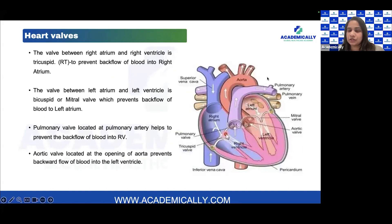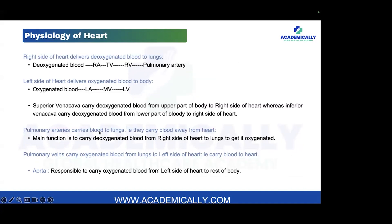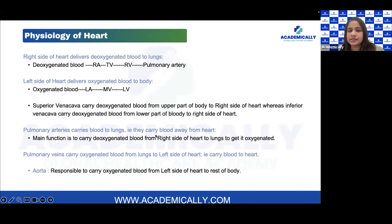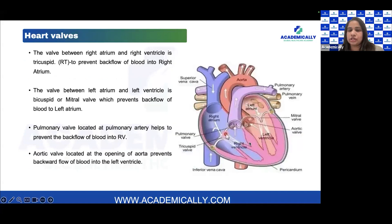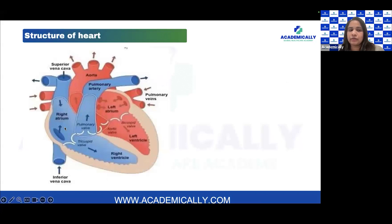The pulmonary arteries carry blood away from the heart to the lungs. They are responsible for carrying the deoxygenated blood from the right side of the heart to the lungs to get it oxygenated. The deoxygenated blood travels from the right atrium through the tricuspid valve to the right ventricle, through the pulmonary valve, and the pulmonary artery carries it to the lungs for purification.